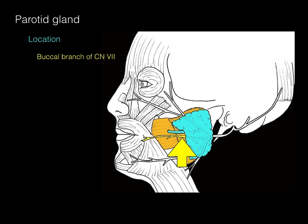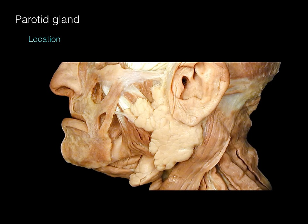Coursing along the parotid duct is the buccal branch of the facial nerve — either parallel to or just inferior to the duct — as it makes its way to the orbicularis oris and other muscles of facial expression that move the mouth. In this cadaveric prosection, the turquoise shows the body of the parotid gland, and you can see how the parotid courses around the bottom and posterior surface of the mandible.